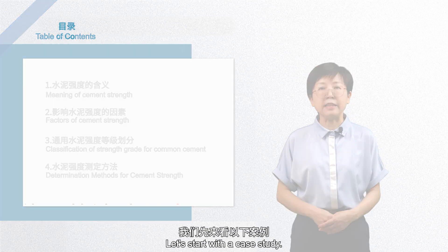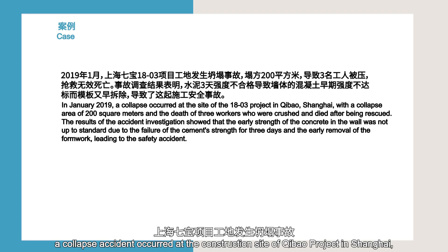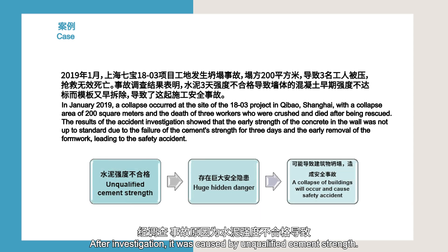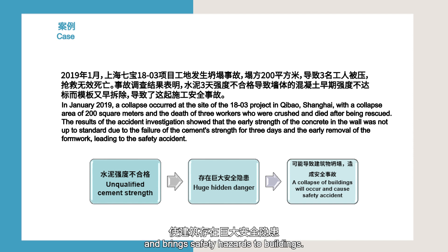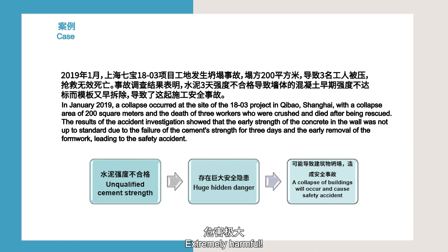Let's start with a case study. In January 2019, a collapse accident occurred at the construction site of Thibao Project in Shanghai, resulting in the death of many workers. After investigation, it was caused by unqualified cement strength. Cement with unqualified strength affects project quality and brings safety hazards to buildings. It may also lead to safety accidents and threaten people's lives – extremely harmful.